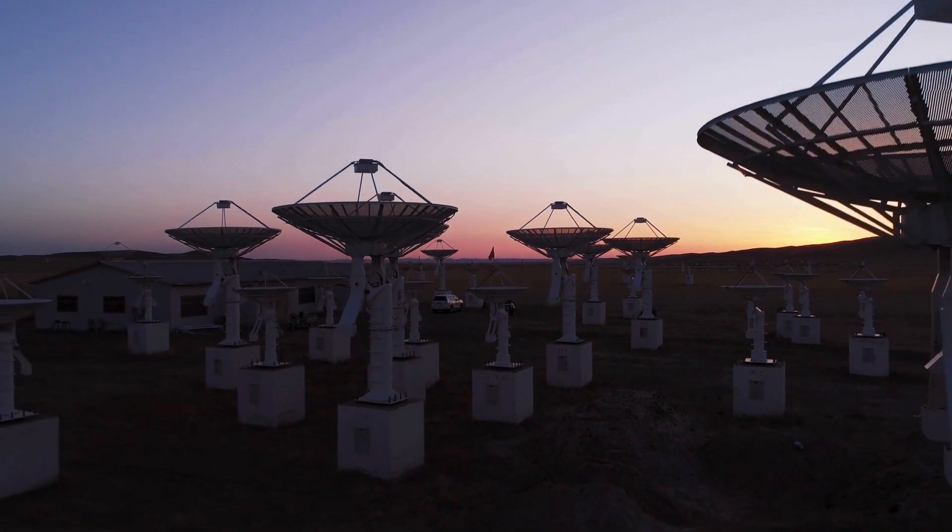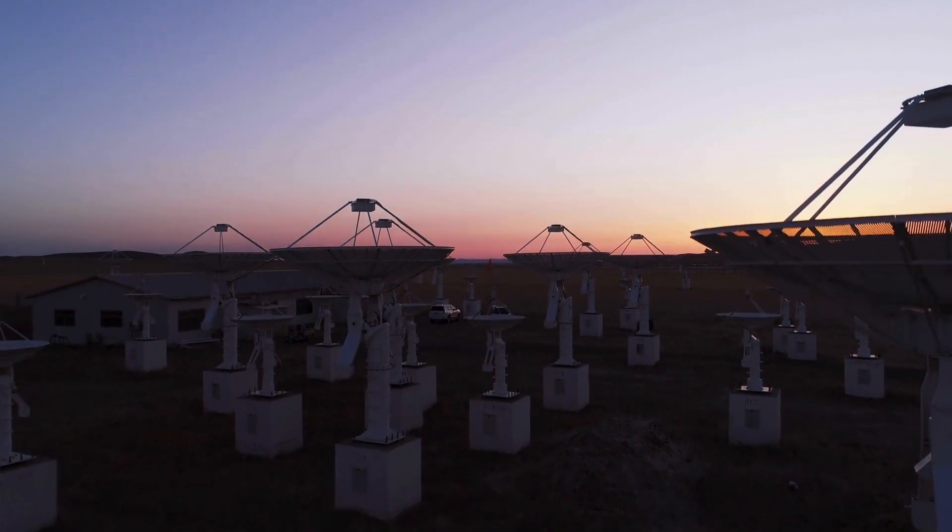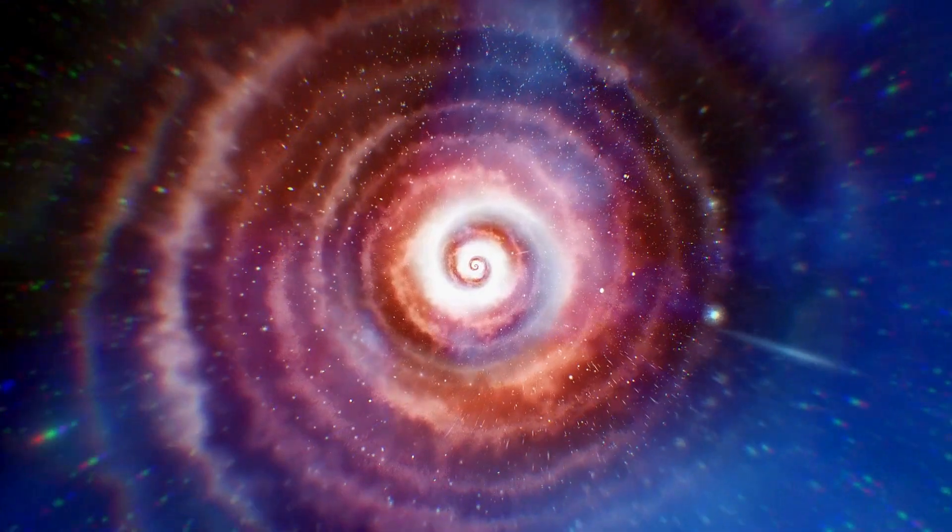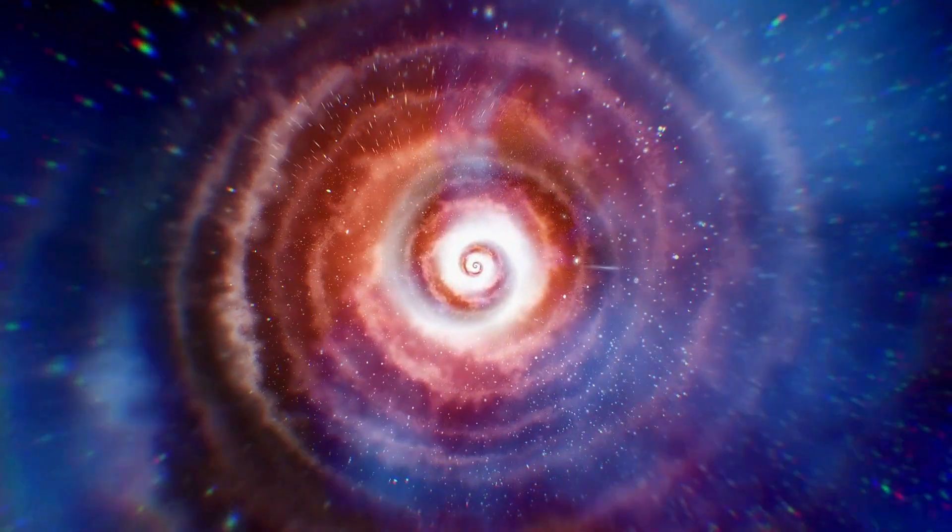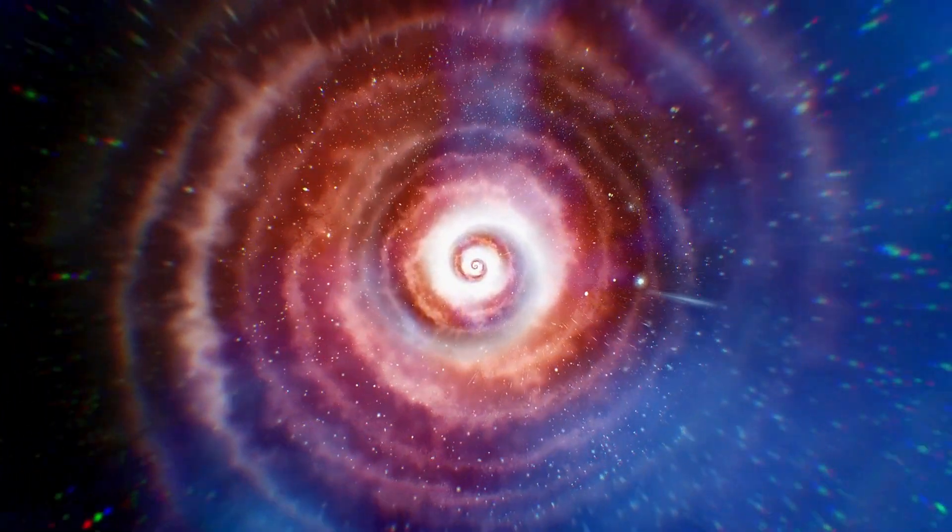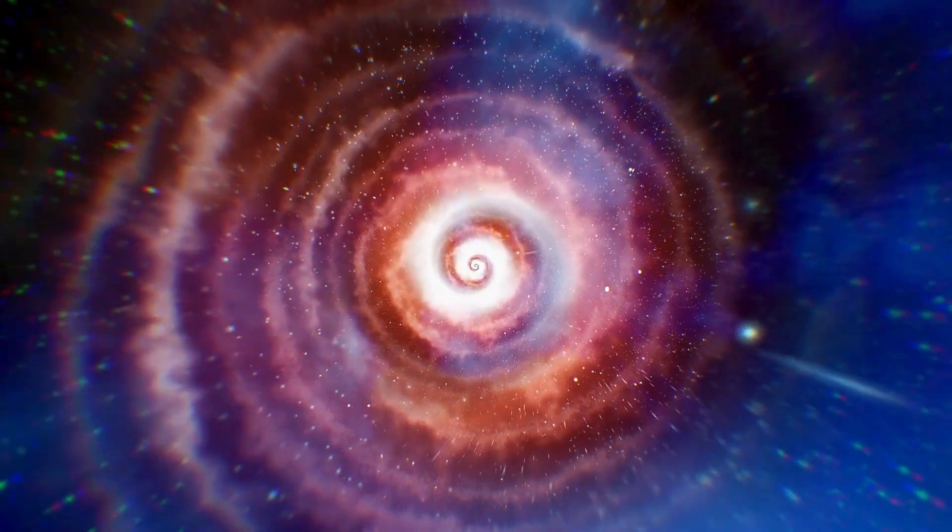In a distant corner of the cosmos, roughly 200 light-years away, an ancient star called HD140283 resides near the Libra constellation. This stellar traveler moves briskly through space, offering intriguing glimpses into its tumultuous past.